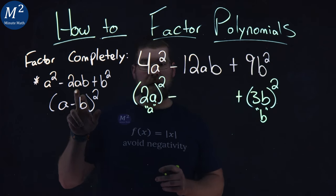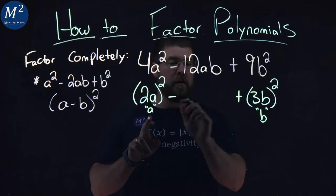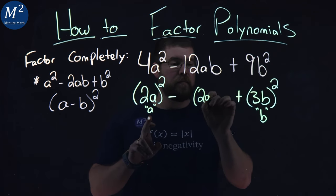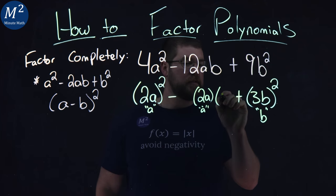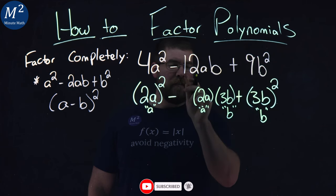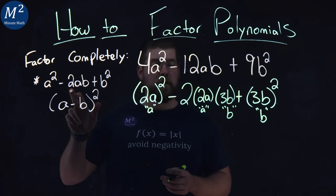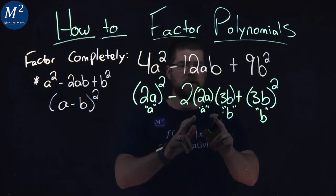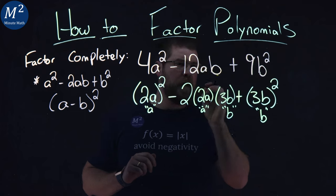Can we rewrite this middle term to be 2ab? My a value is 2a, and my b value is 3b. If I can put a 2 here, that would have the exact form that I need. But I want to make sure that this middle term matches the 12ab.